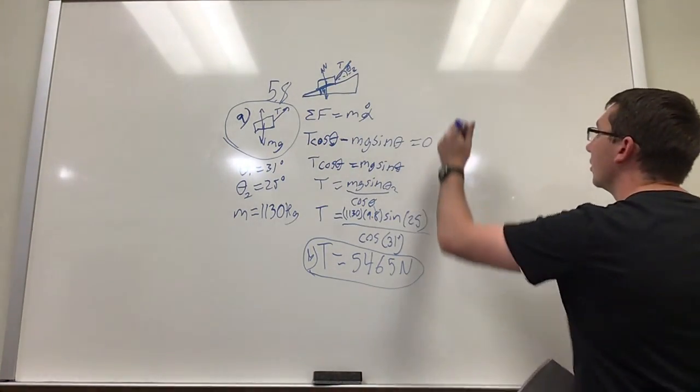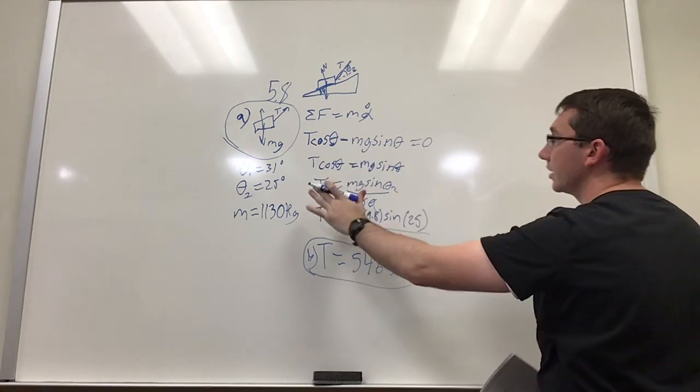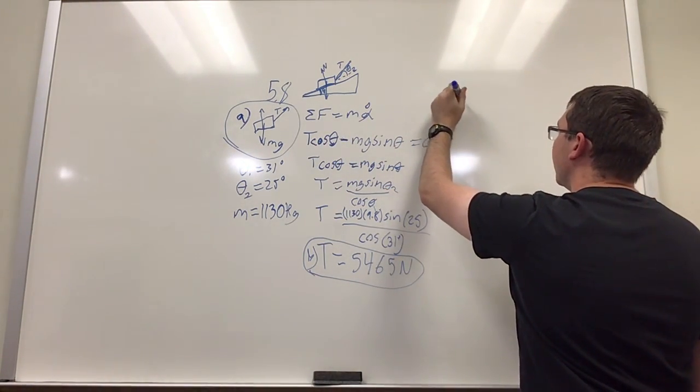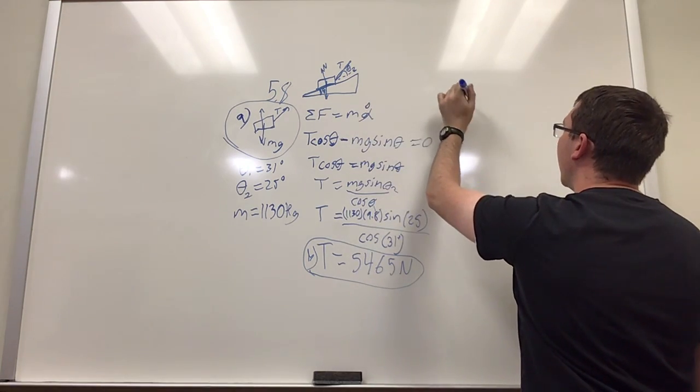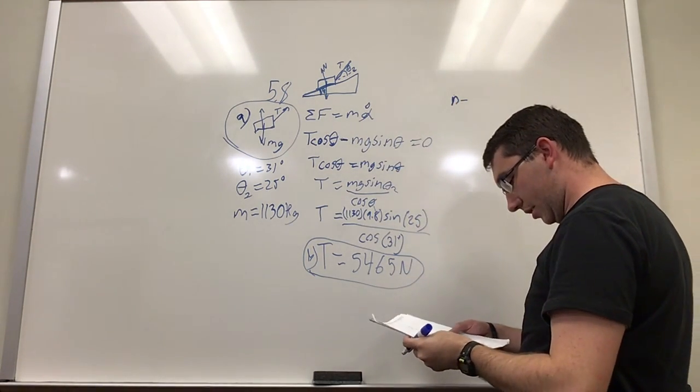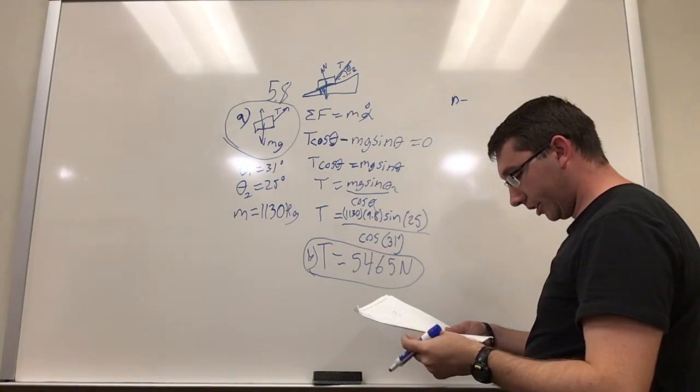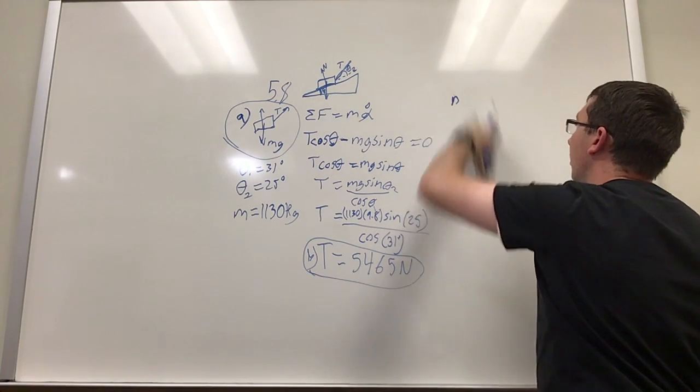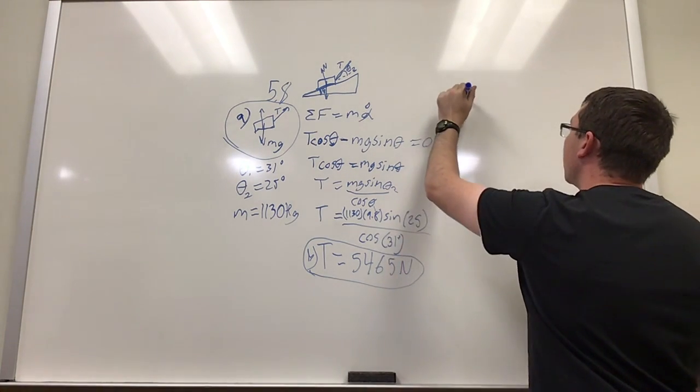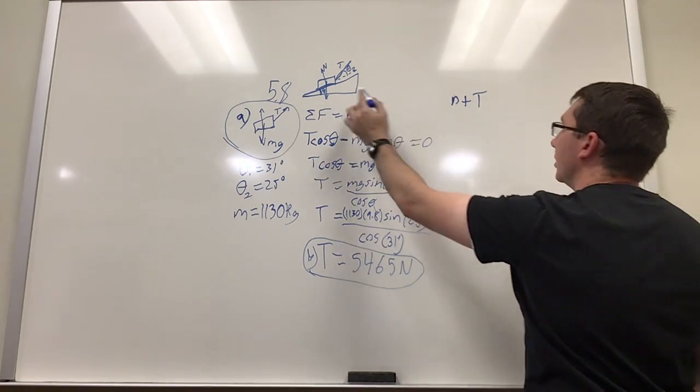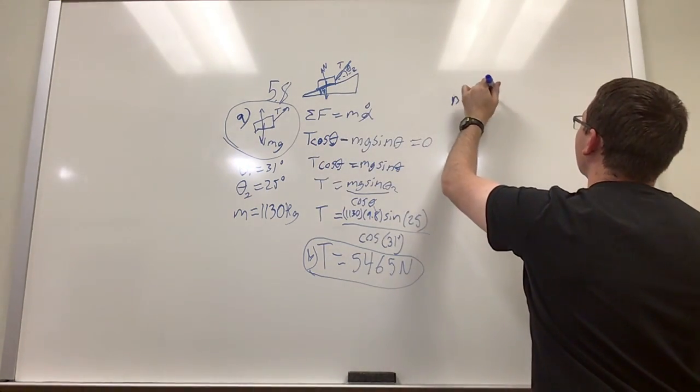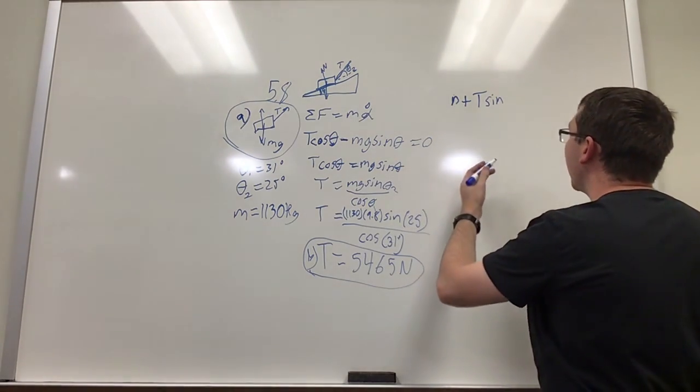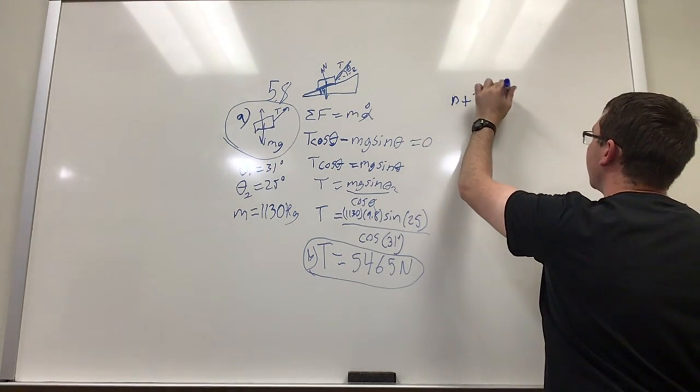So when we do force in the y-direction, we know that we've got the normal force plus tension times sine of this angle, because that's going to have an upward force component on it, minus mass times gravity times the cosine of this angle, because there's going to be a y-component to that weight.